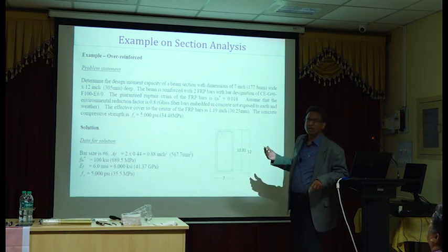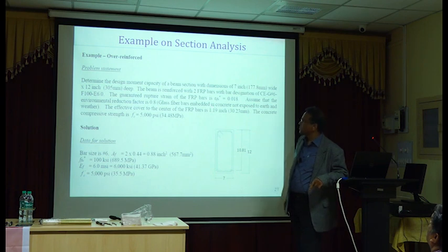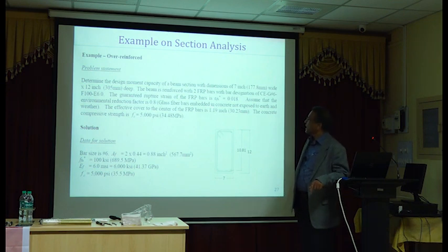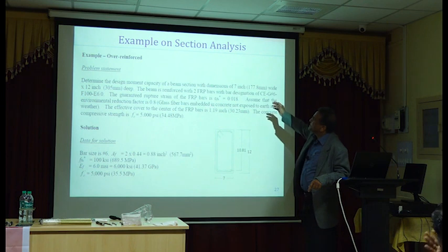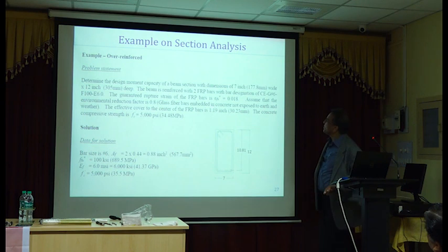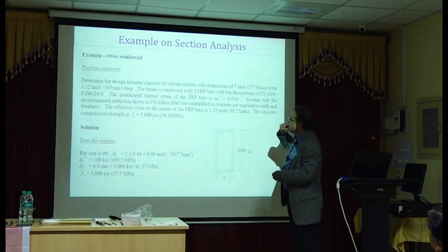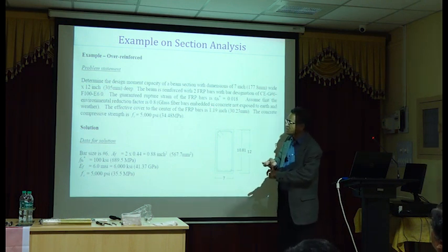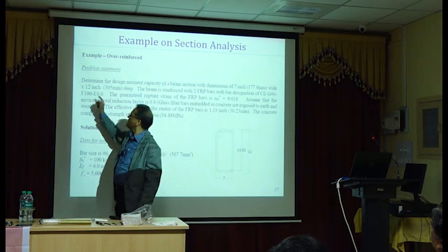So I have spreadsheets, but they are all in KSI units. That's the reason I'm not able to share that with you. But if you don't mind the KSI units, I can forward it to you. So now, in this beam design, the problem statement says the width is about 177.8 millimeter. The depth is 305, that's overall height, reinforced with two FRP bars with designation G number 6, F100, E6.